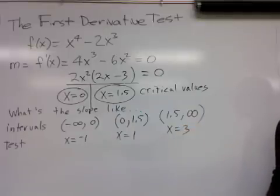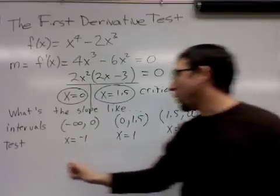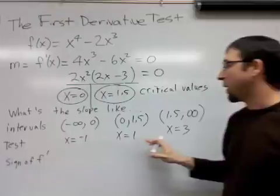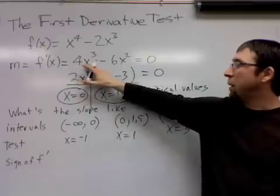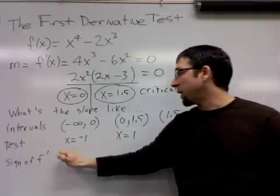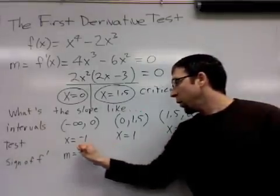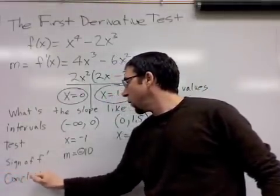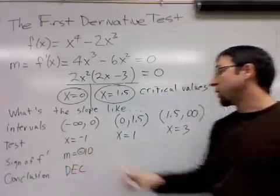We're going to test those numbers, and where are we going to test them? Well, the name says it all. It's the first derivative test. We're going to test those numbers in the first derivative to figure out what the sign is like of the derivative for each of these x's. If you plug -1 into the derivative, you get 4 times (-1)³ minus 6 times (-1)². You end up finding that the slope is -10. The 10 is not as important as the negative part. We know the slope is negative, so we can come to a conclusion. The conclusion would be that the graph is falling or is decreasing because the slope is negative.